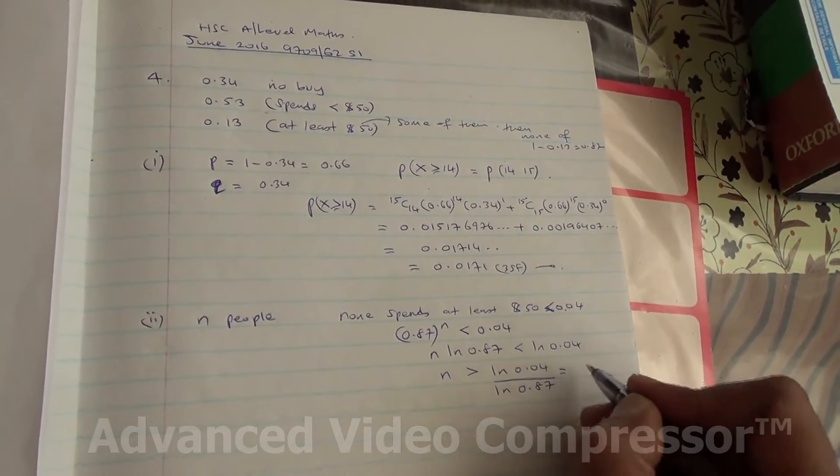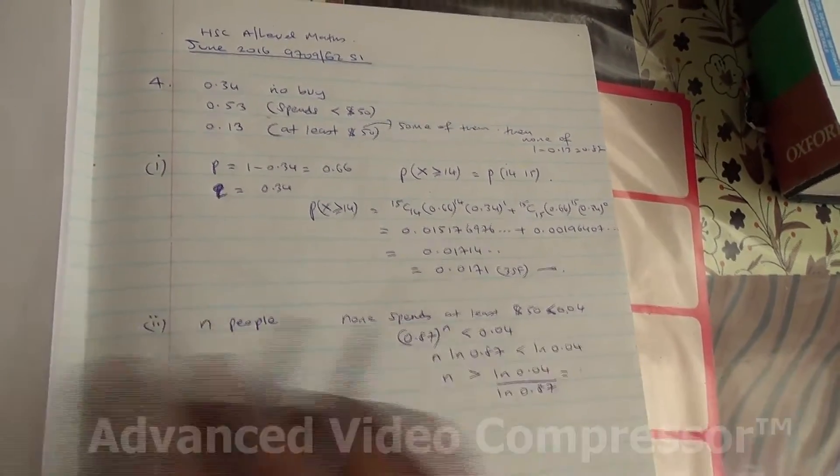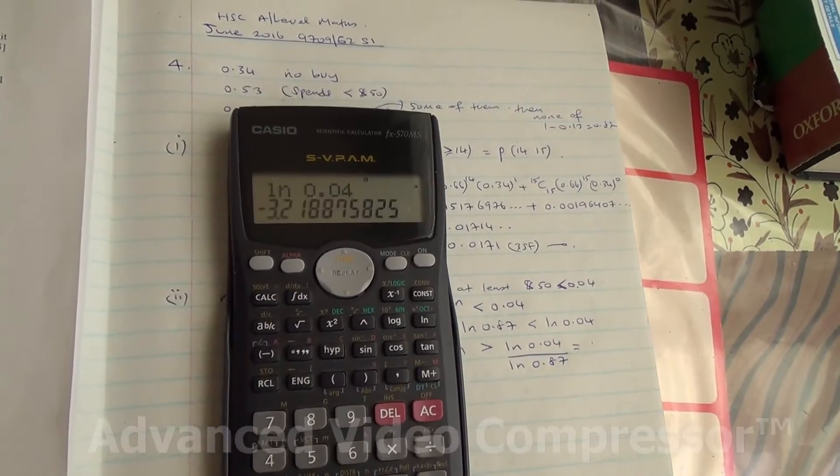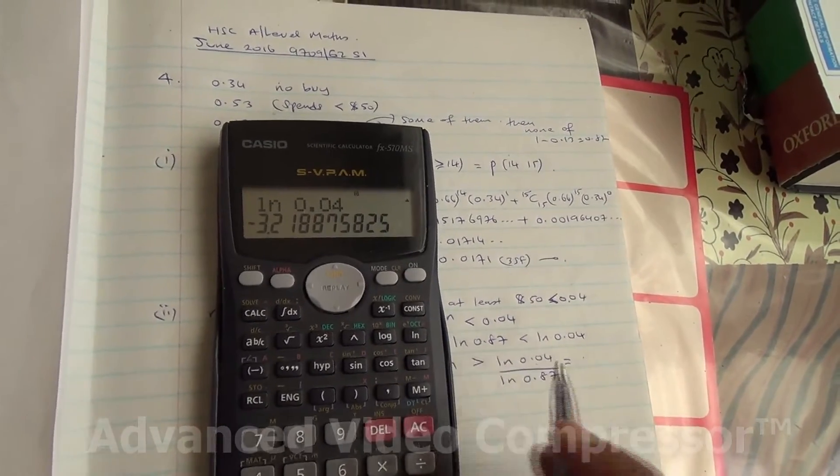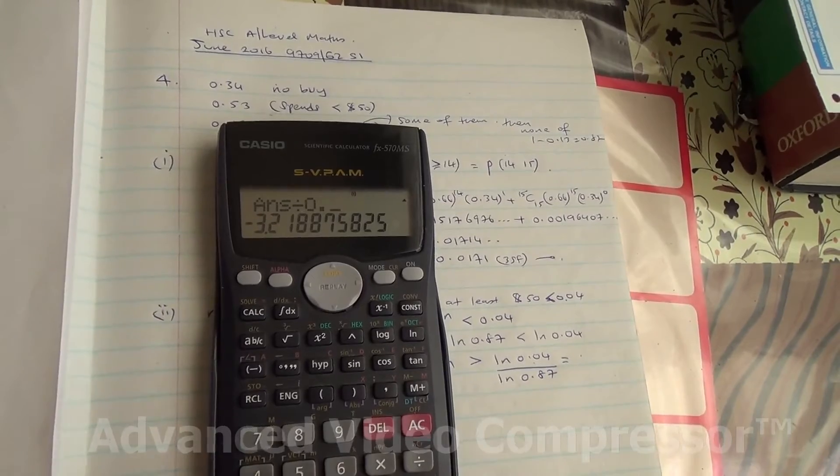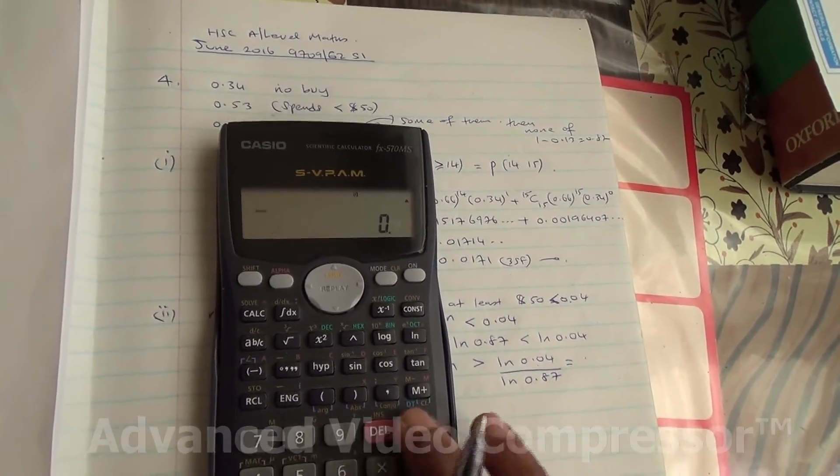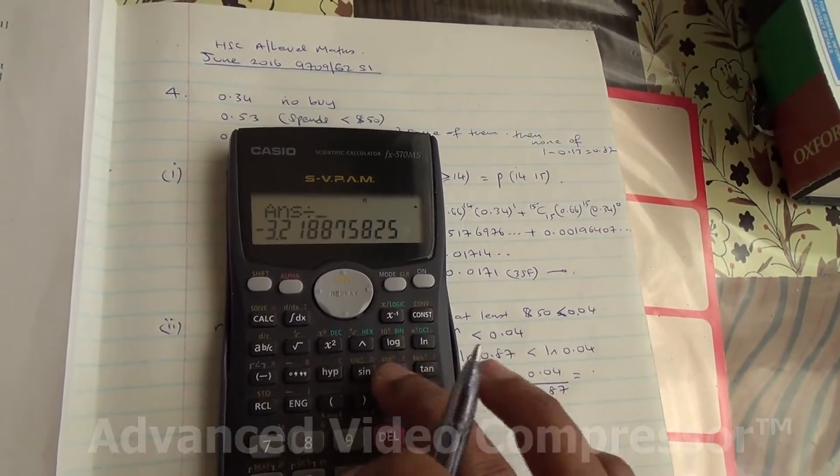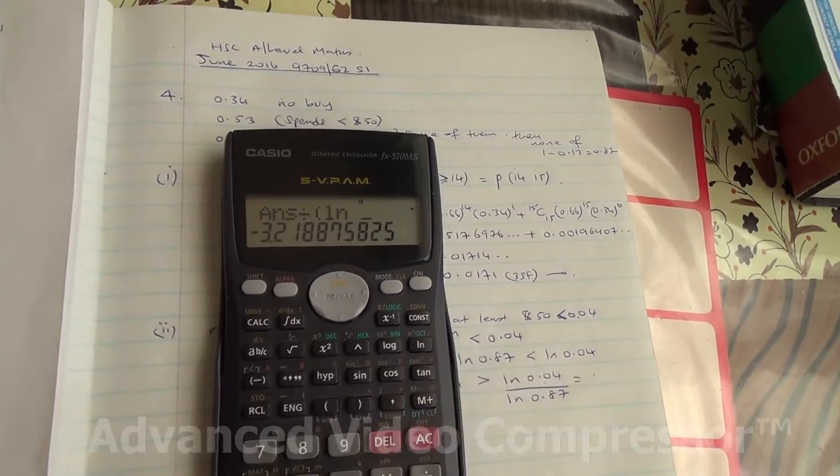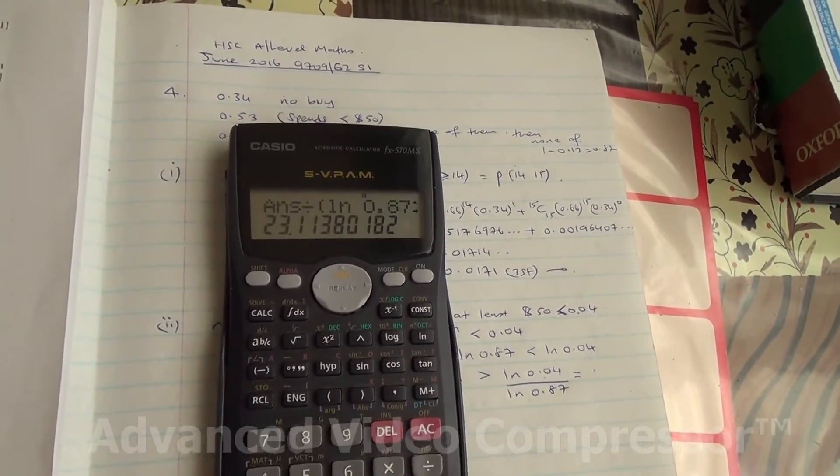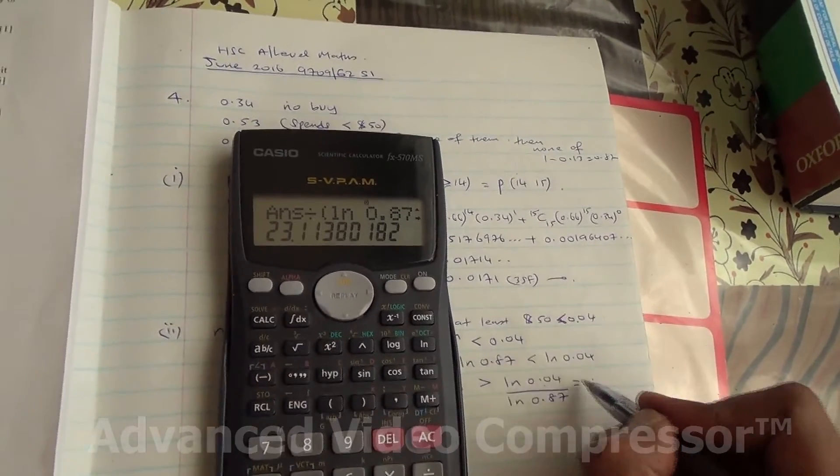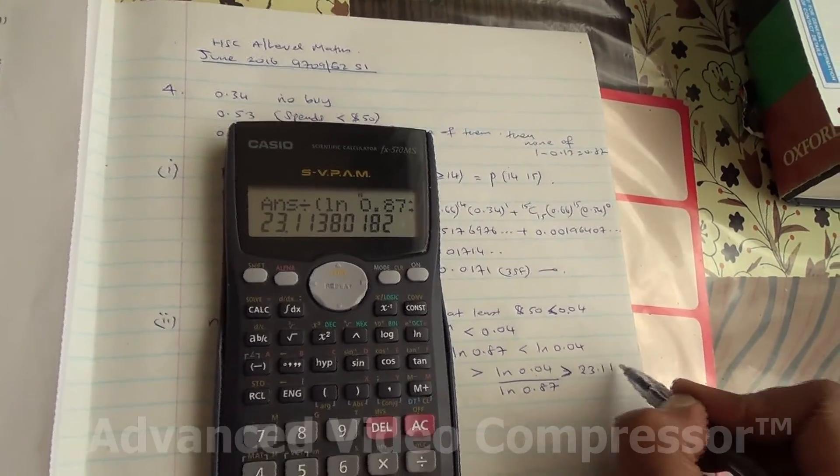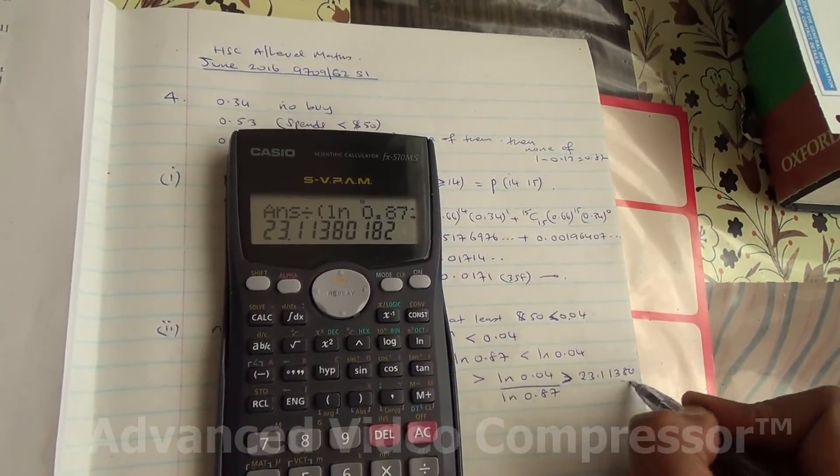So, that's going to be then equal to, let me just do it. So, ln 0.04, this much, divided by ln 0.87. Check out, ln 0.04 divided by ln 0.87. Here we are, 23.1338. So, it's going to be 23.1138 and so on.